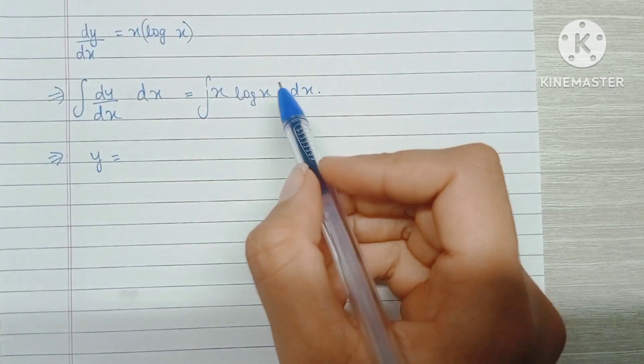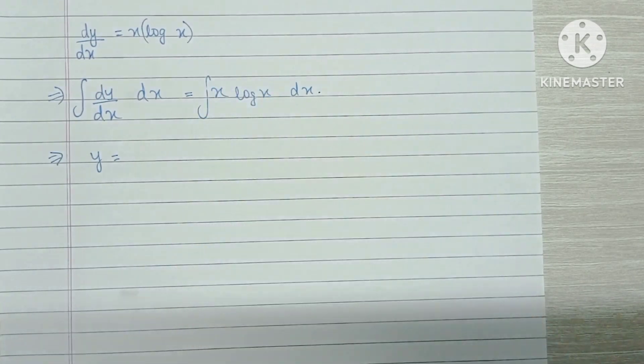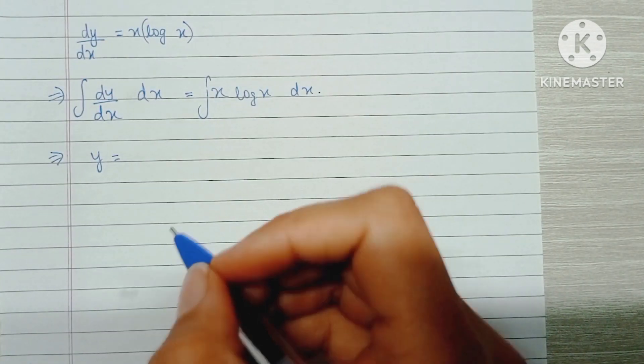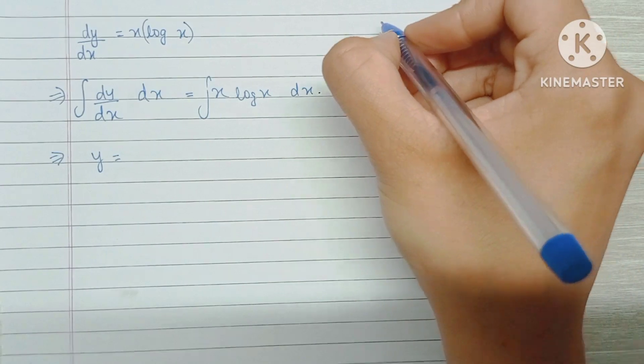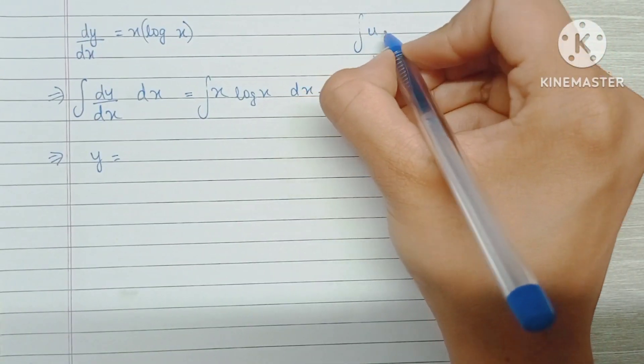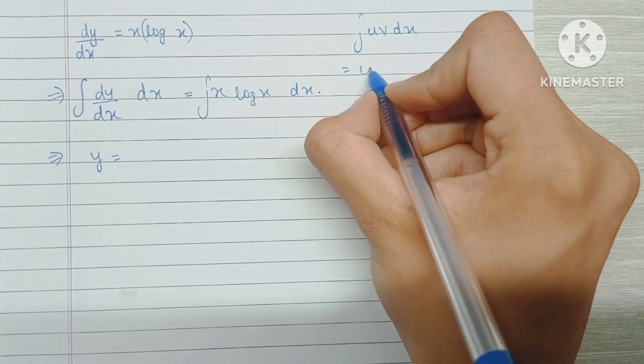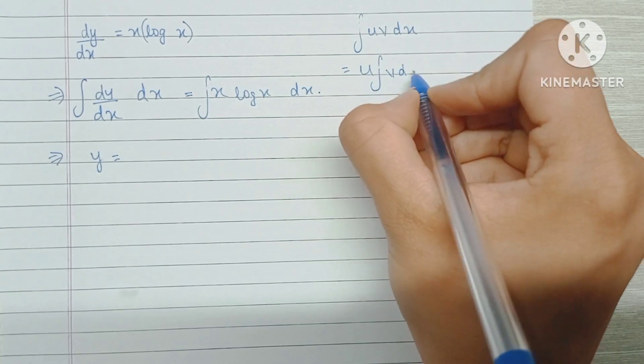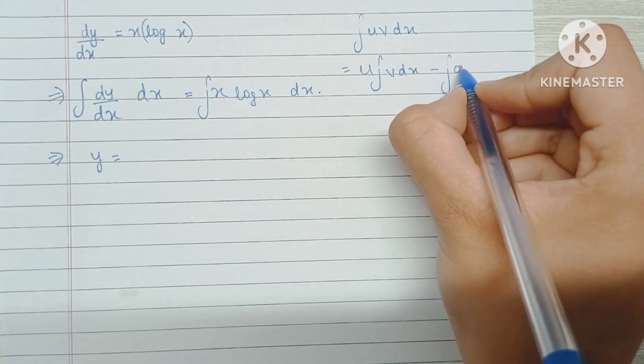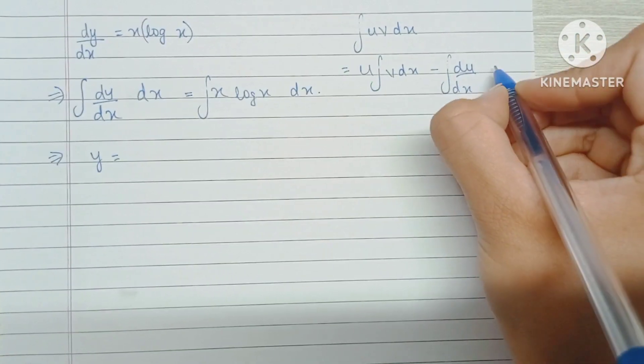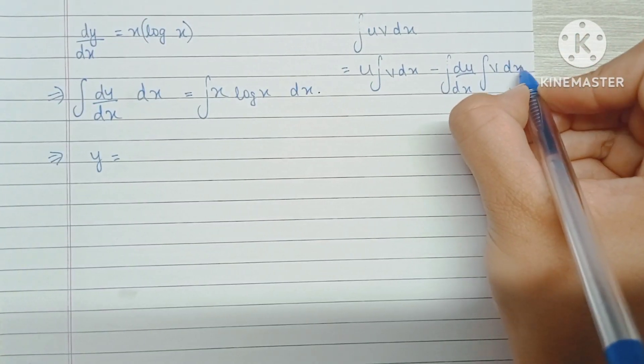Now we're going to integrate this part using the by parts formula. The integration of uv with respect to x equals u times the integration of v dx minus the integration of the differentiation of u times the integration of v dx.